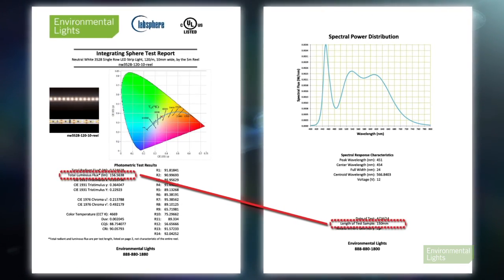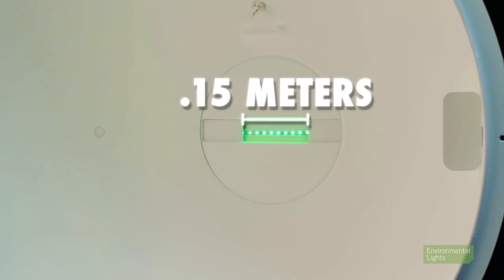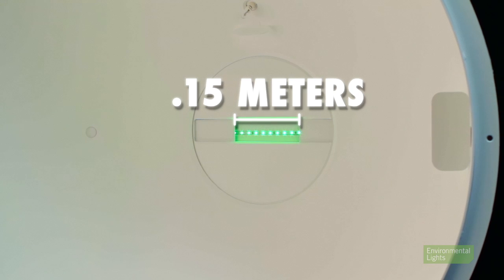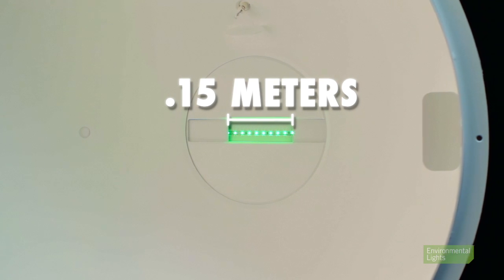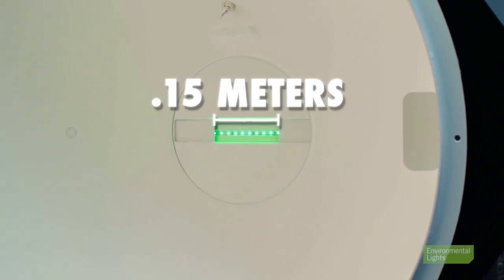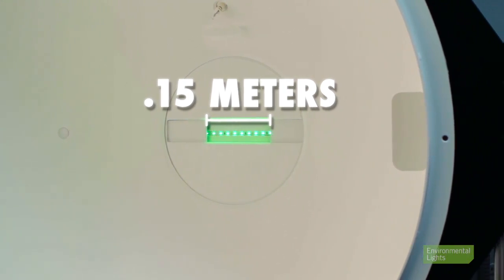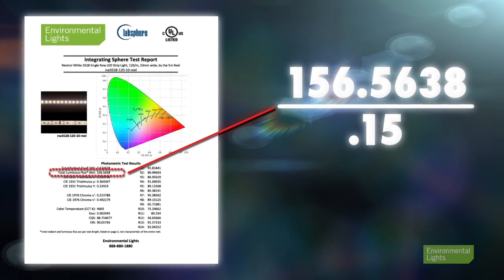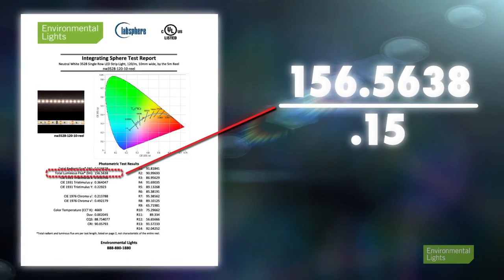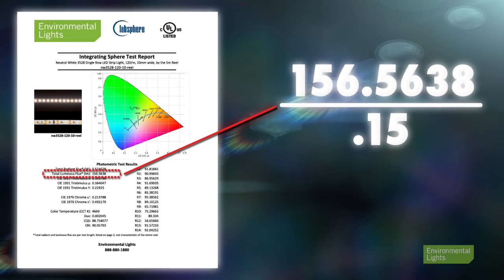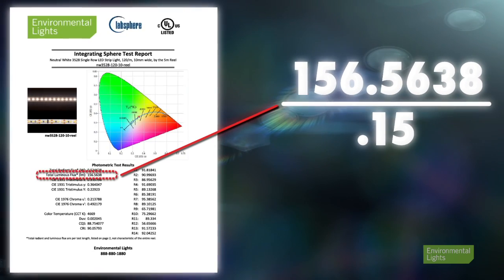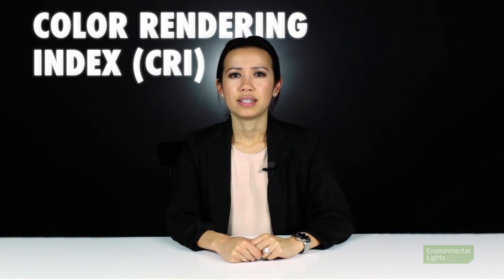For example, most of our LED strip lights are measured in the lab sphere with 0.15 meters exposed inside the sphere. In order to calculate the estimated luminous flux per meter, simply take the luminous flux value you see in the test report and divide by 0.15.